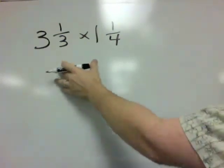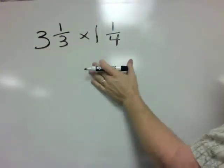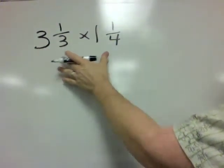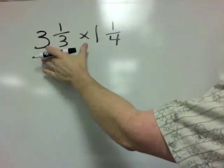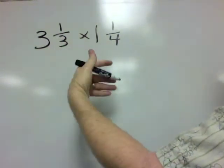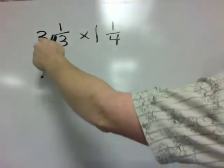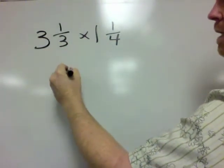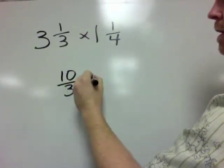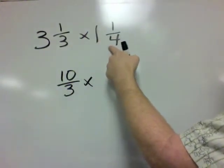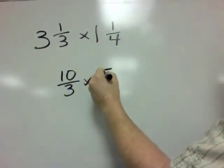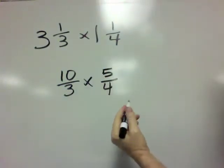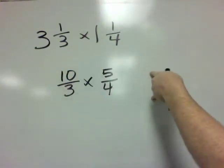All right in this example we've got a couple of mixed numbers. So the first thing we have to do is change these two mixed numbers into improper fractions. So 3 times 3 is 9 plus 1 is 10. So we get 10 thirds times 1 times 4 is 4 plus 1 is 5. So now we have 5 fourths. Now we could multiply straight across.